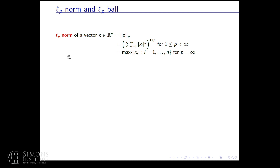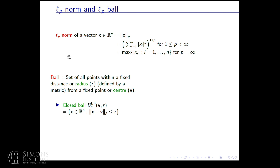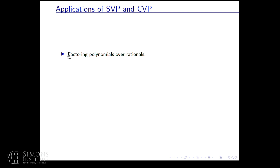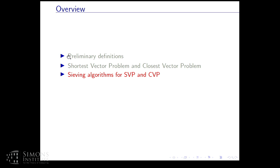Since we are talking about LP norms, a quick recap: the LP norm of a vector is given by the summation of |xᵢ|^p, the whole raised to the power 1/p. In the L-infinity norm, it's just the maximum of the absolute value of any coordinate. A ball is the set of all points within a fixed radius from a center. This figure shows closed balls in L1, L2, L4, and L-infinity norm. The applications of SVP and CVP include factoring polynomials over rationals, checking solvability by radicals, solving low-density subset problems, cryptanalysis, cryptography, and integer programming.